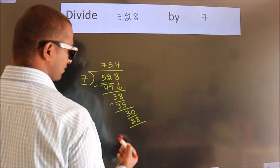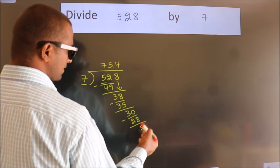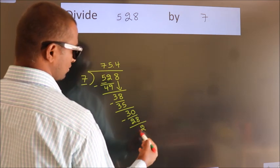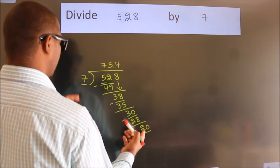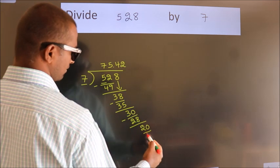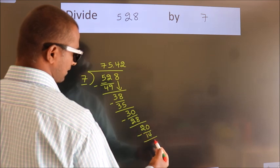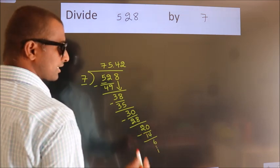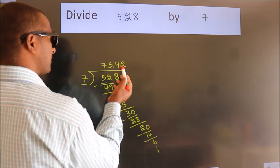Now we subtract: 30 minus 28, we get 2. Since we already have the decimal, we directly take 0, giving us 20. A number close to 20 in the 7 times table is 7×2=14. We subtract and get 6. The division continues, but it is enough to go up to two decimal places.